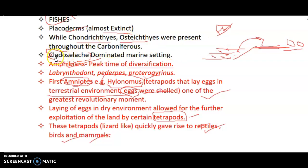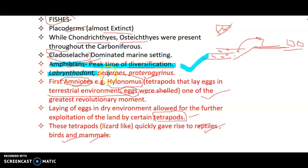The Carboniferous period is also known as the age of amphibians, as it was the peak time of diversification for amphibians. Amphibians present included Loxomma, Dendrerpeton, Pederpes, and Proterogyrinus. The first amniotes also appeared in the Carboniferous period, which was one of the greatest revolutionary moments in the geological history of Earth.